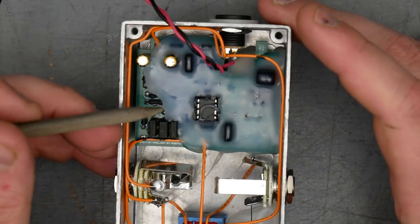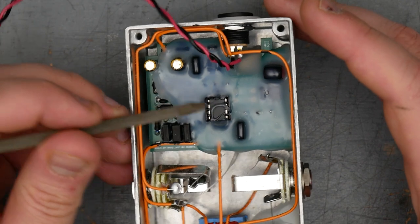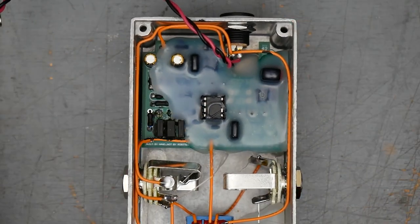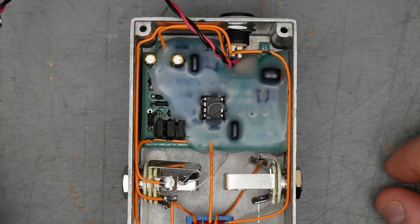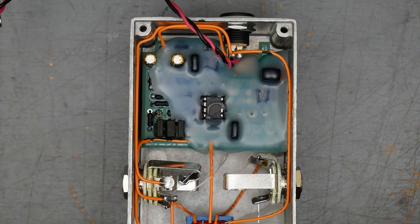We can see, however, the op amp, which is a Burr-Brown OP2134, which is a high quality, expensive, low noise dual op amp. So that's a nice quality component. That's cool.